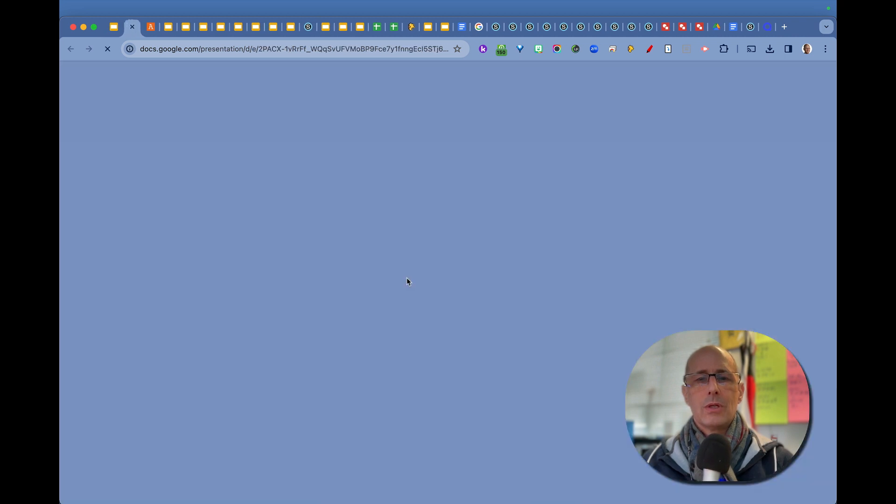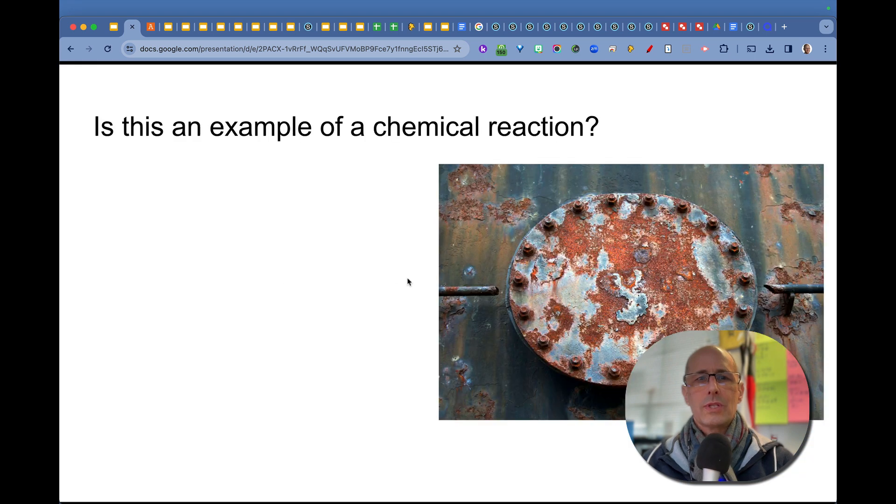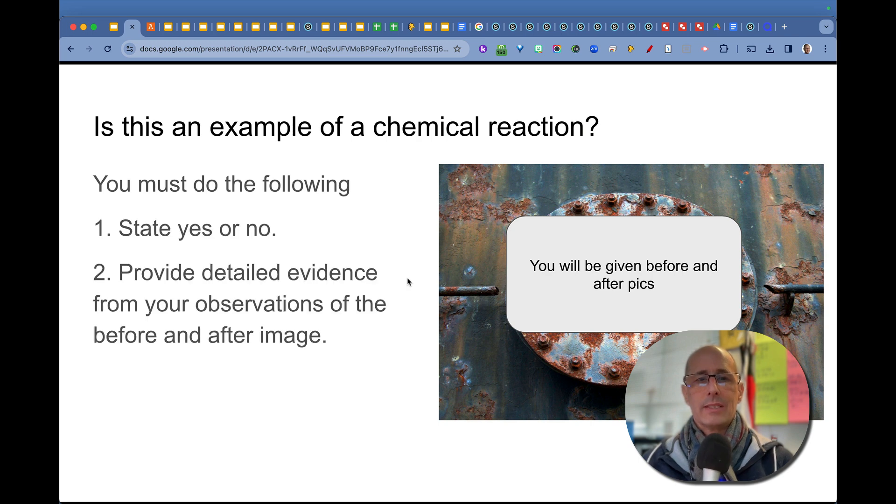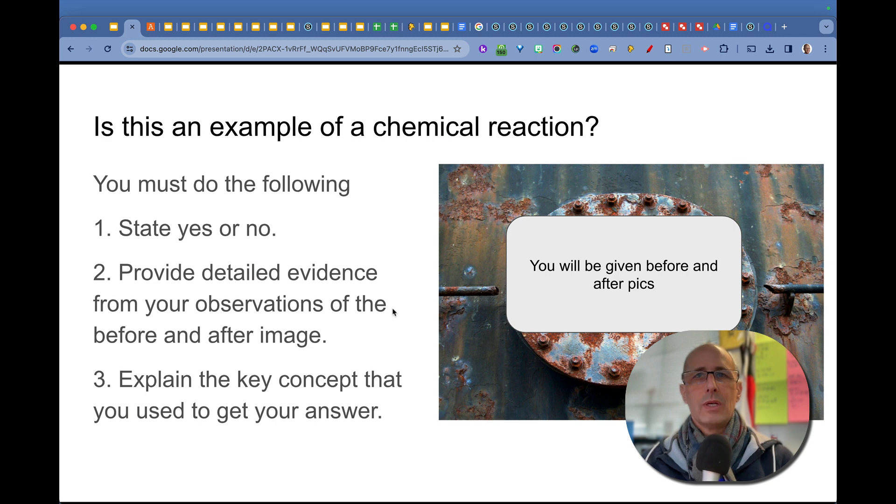They had to do the following things: state whether yes or no a chemical reaction happened, provide detailed evidence from their observations of the before and after image, basically the properties. What was the color before and afterwards, what was the texture before and afterwards, things like that. Then they had to explain the key concept that they used to get the answer. Basically it was different substances have different properties. So if the substance before had different properties than the substance afterwards, you know that was a chemical reaction.